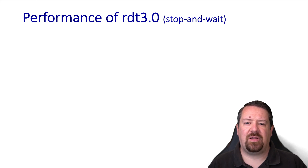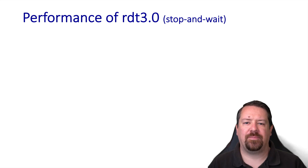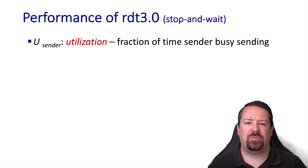In the last video, we talked about the design of a stop-and-wait protocol for reliable data transfer. Now we're going to evaluate its performance in terms of utilization — the fraction of time that the sender is able to utilize the bandwidth of the link they're connected to.